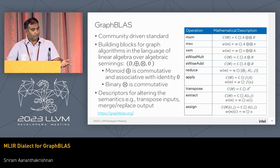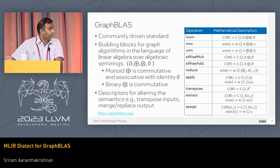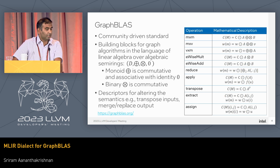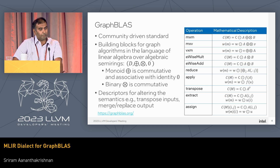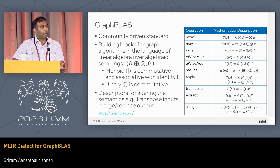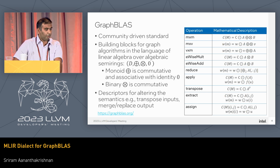GraphBLAS — where BLAS stands for Basic Linear Algebra Subprogram — is an effort to standardize this linear algebra-based approach to analyze graphs. It's a community-driven effort that provides building blocks for writing graph algorithms using sparse linear algebra over algebraic semirings. Algebraic semirings are a concept from abstract algebra — the easiest way to think about it is that you replace the scalar multiply with a binary operator and the add with a monoid operator.